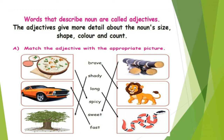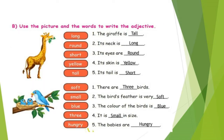Match the adjectives with the appropriate picture: brave lion, shady tree, long snake, spicy dish, sweet sugar cane, fast car. In the above given pictures, the words that describe the noun are adjectives. Use the picture and the words to write the adjective. The giraffe is tall, its neck is long, its eyes are round, its skin is yellow, its tail is short. The words long, round, short, yellow, tall are the describing words for giraffe — that is the noun — so these words are adjectives.